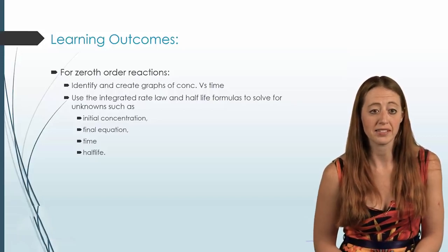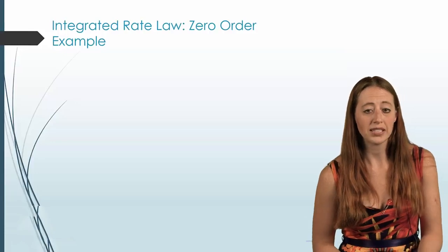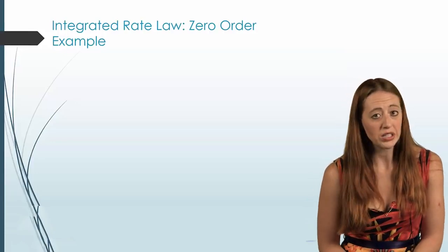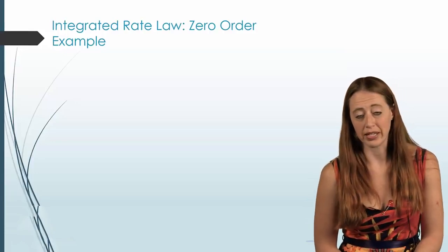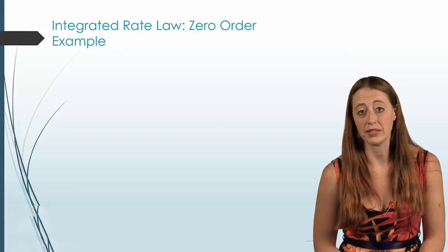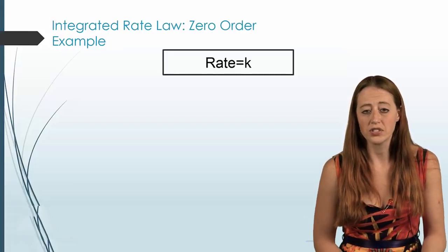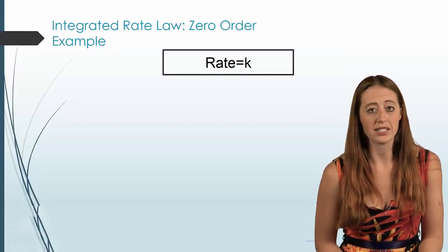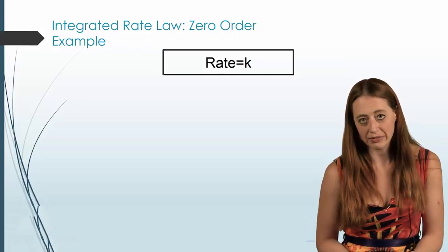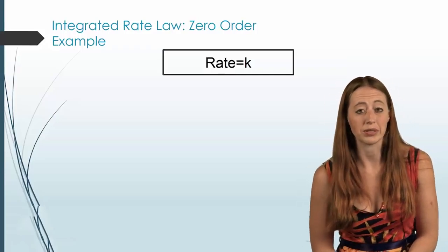Let's look at our rate law. We already know what a zero order rate law looks like. Zero order is not related to the concentrations, so it's just that rate is equal to some constant k. There's no concentration of any reactant here because it's a zero order rate law.